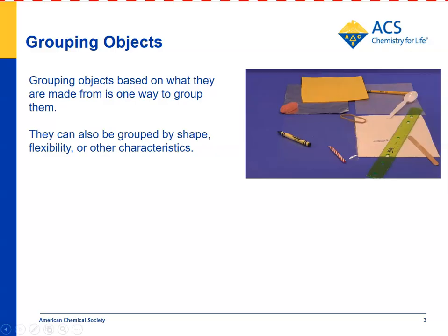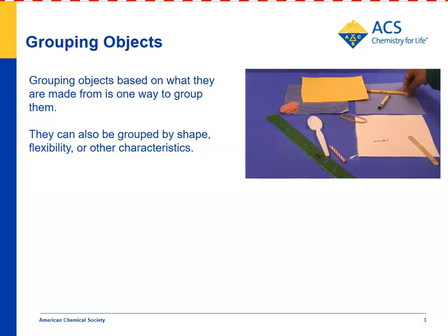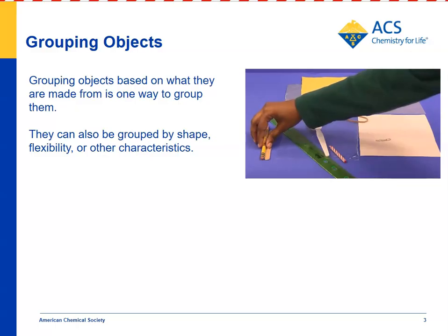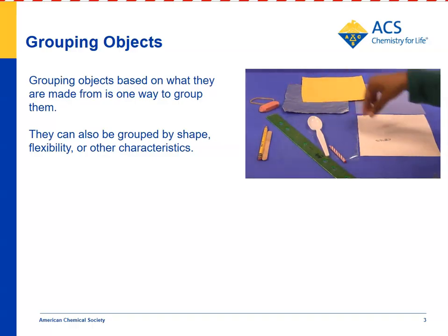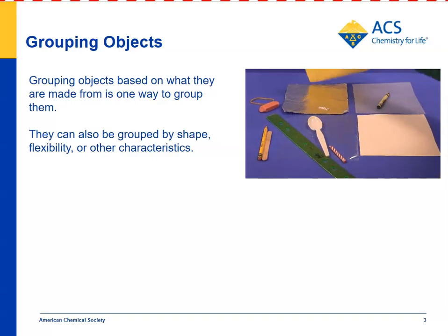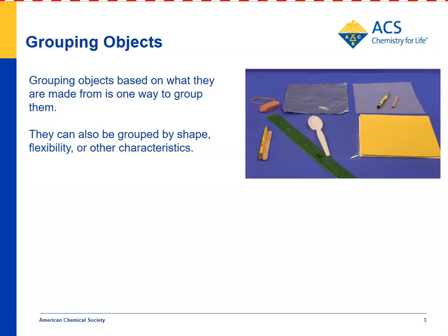In this case, we're showing that objects are being grouped according to what they're made from. So a plastic ruler ends up being grouped with a plastic spoon, and a wooden pencil with a wooden popsicle stick. They've also grouped the rubber band and the eraser together, the aluminum foil and the metal paper clip, anything made out of wax — wax paper, a crayon, and a candle — and paper, such as construction paper and copier paper.